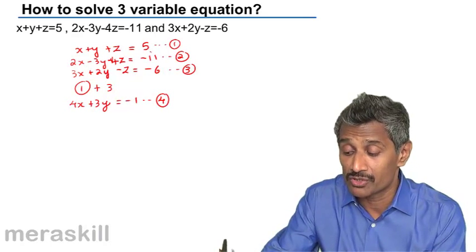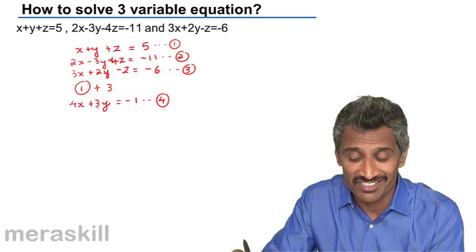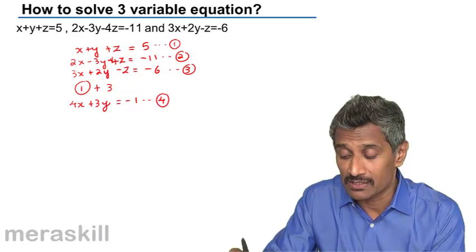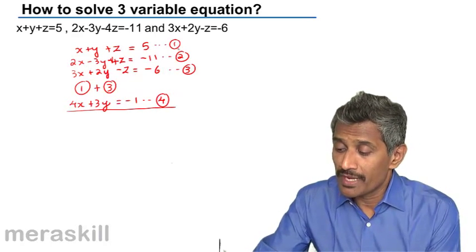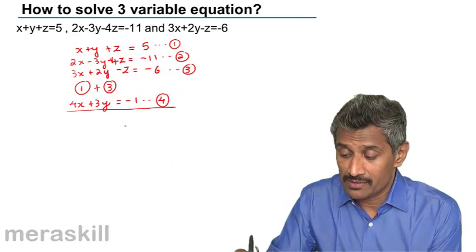So from an equation in three variables, it is turned into an equation in two variables. So we add 1 and 3 and we get this.